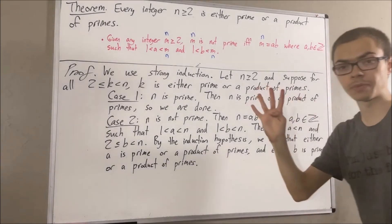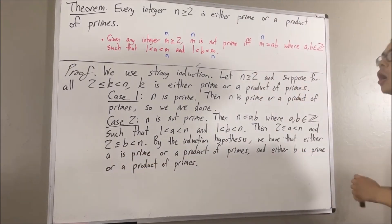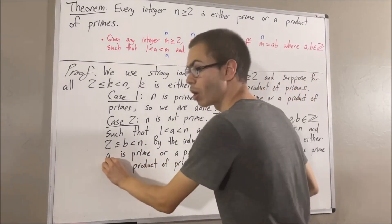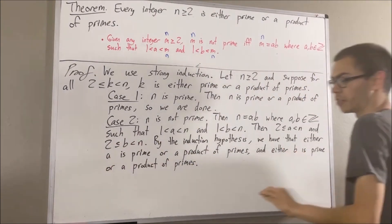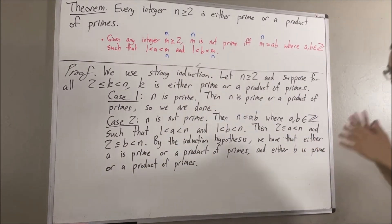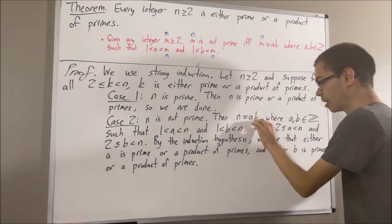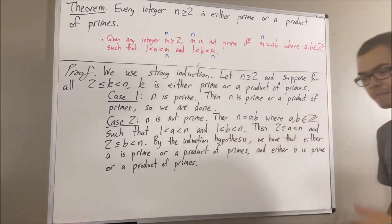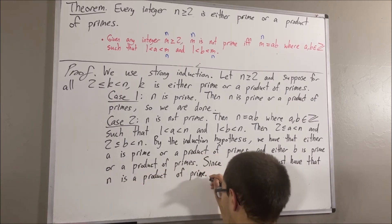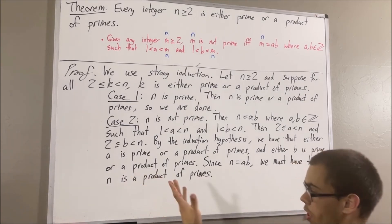Four possibilities arise from this. One possibility is that a is prime and b is prime. Another is that a is prime and b is a product of primes. Another is that a is a product of primes and b is prime. And the last possibility is that a is a product of primes and b is a product of primes. But no matter which of those four possibilities is the case, since n equals a times b, we must have that n is a product of primes — which means n is either prime or a product of primes.